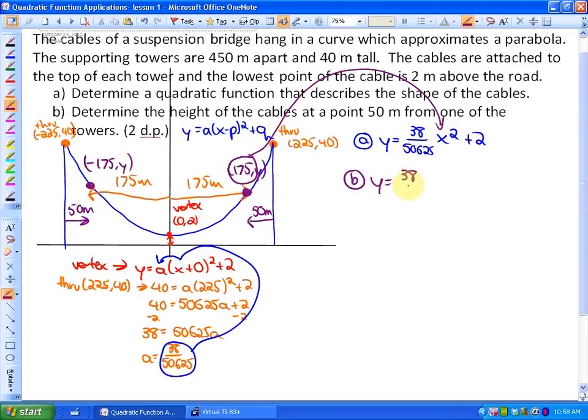175 squared. Now we're just going to perform BEDMAS in order to simplify this. 175 squared is 30,625. And finally, what I would do is, maybe I'll even show you on the calculator here, just be careful about your order of operations.